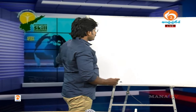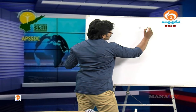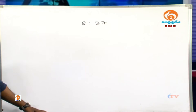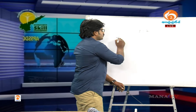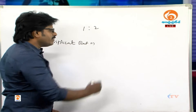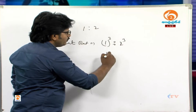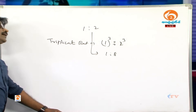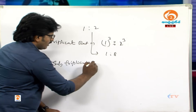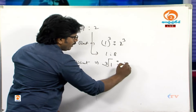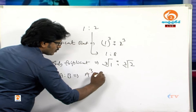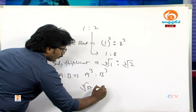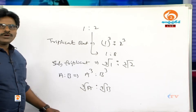Similarly, for the triplicate ratio: if the original ratio is 1 is to 2, the triplicate ratio is 1³ is to 2³, which equals 1 is to 8. The subtriplicate ratio uses cube roots: cube root of A is to cube root of B. So if original ratio is A is to B, triplicate ratio is A³ is to B³, and subtriplicate ratio is ∛A is to ∛B.